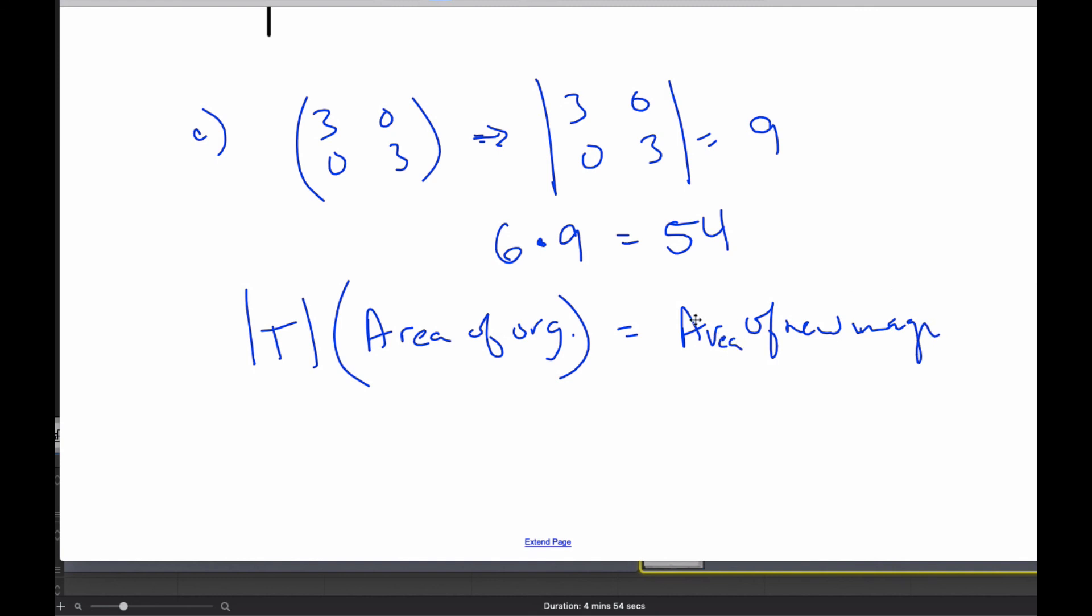will be the area of the new image. And more than it looks like it, it is actually true. So the area of the original times the determinant equals area of the new. This is not in your formula booklet, so it's something you should be aware of.